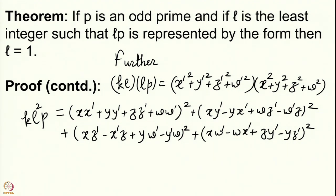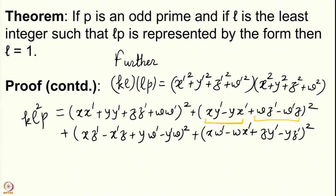Now we make one very important observation. In the product formula, x ≡ x′ mod l and y ≡ y′ mod l, so the combination x·x′ + y·y′ + … involves terms that are 0 modulo l. Each of the 4 terms in the sum of squares expression for kl²p is 0 mod l², so all 3 remaining terms are divisible by l². This means the entire expression is divisible by l².